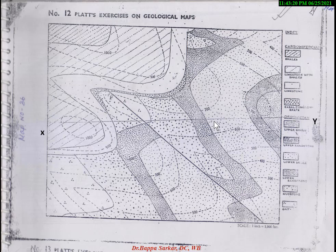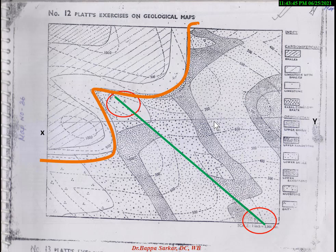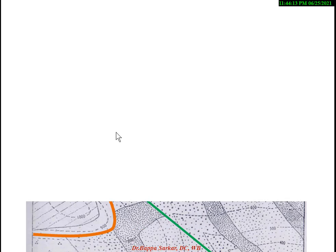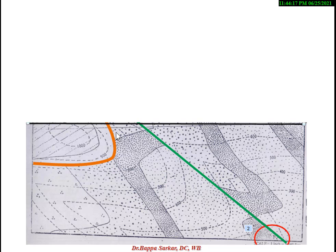First, your job is to identify the unconformity. If you don't know how, go to my previous video where I have shown how to identify unconformity in different maps. Here the unconformity is this orange line — because in this area the bed suddenly ends, so this is the non-erosional depositional line called the unconformity line.